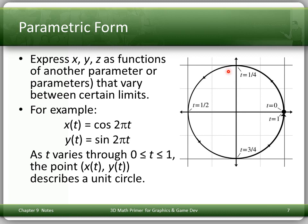So for example, when t is 0 we're here. As t goes towards a quarter, we move along this arc. Here's t equals a quarter. As t moves to a half, we go to here. t moves to 3 quarters. Finally t goes to 1 and we end up back at the beginning. So as t varies, we're taken around the unit circle centered at the origin. That's an example of parametric form — it's called parametric because we express x and y as functions of a new parameter.